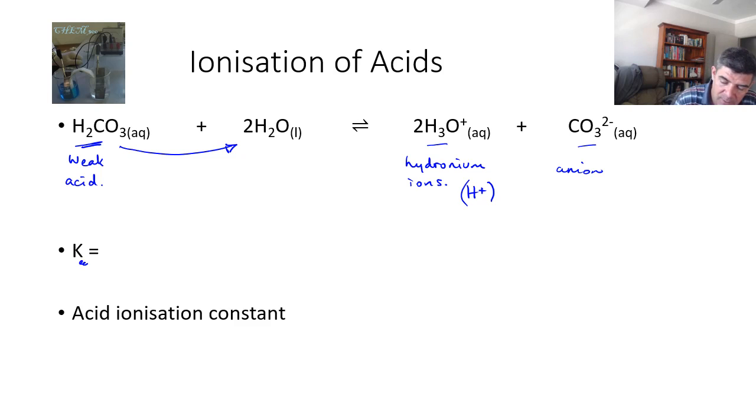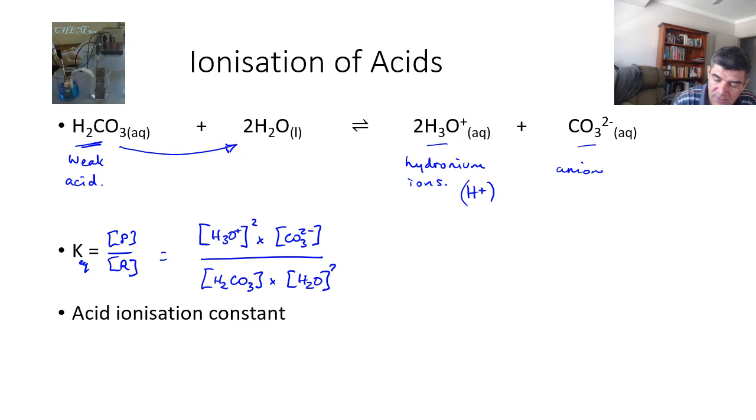The expression for the equilibrium constant, as always, is concentration of products over concentration of reactants. In this case, we would have H3O+ raised to the power of 2 multiplied by our concentration of CO3 2-, and that's our products, and our reactants, concentration of H2CO3 multiplied by water, which because there's a 2 in front, we would raise to the power of 2. Of course, from previous examples, we know that because water is existing in its liquid form, this part is a constant. Even if we have changed the volume of water, we also change the number of moles of water, so its overall concentration doesn't change. When we multiply our constant by our constant, we just get another constant.